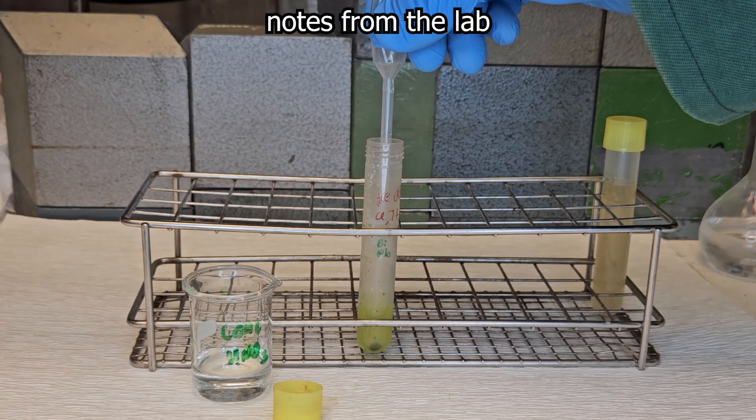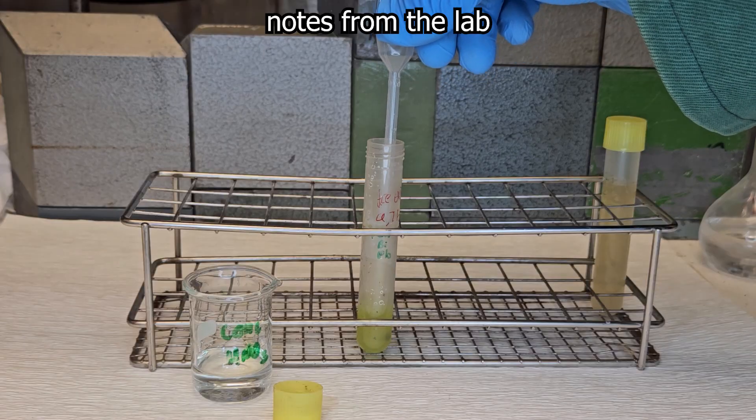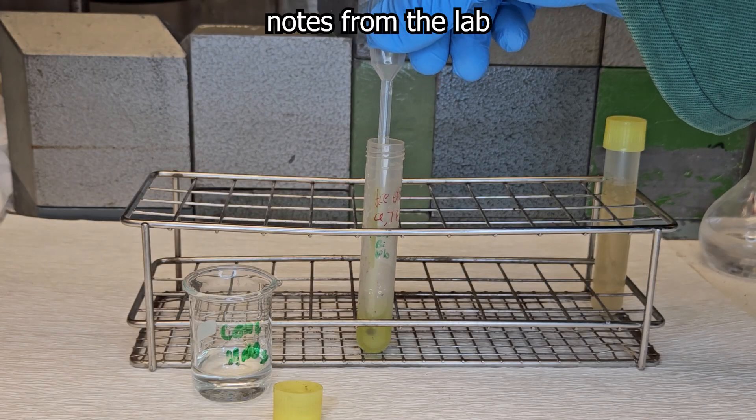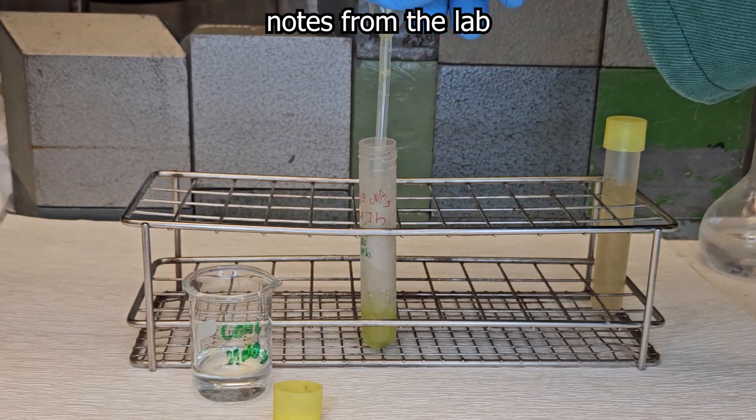It is quite possible that a residue remains after this sulfate precipitation step, which is not even soluble in concentrated nitric acid. This flake can be discarded. Any polonium present has already dissolved.